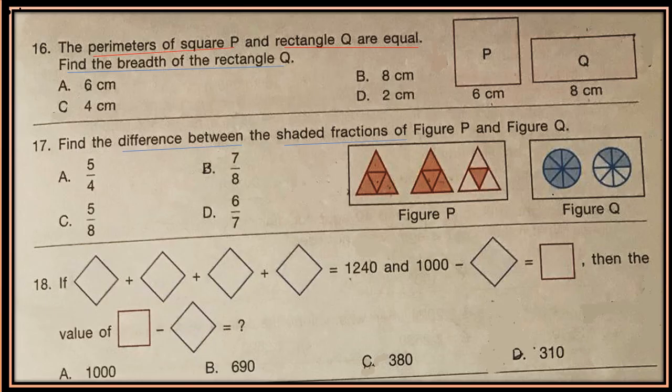Question 16: The perimeters of square P and rectangle Q are equal. Find the breadth of rectangle Q. See the figure — square P and rectangle Q are given; the perimeters of P and Q are equal. The side of the square is given and the length of the rectangle is given. You have to find the breadth of rectangle Q. See the solution at the end of the video.